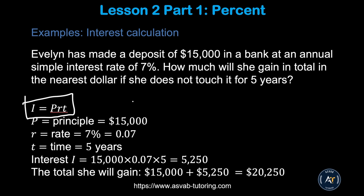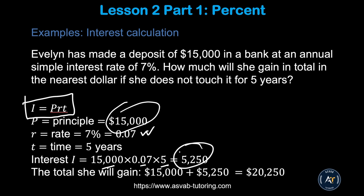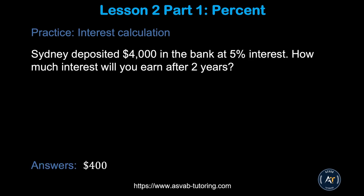For example: principal is $15,000, rate is 5 percent (convert to decimal: 0.05), and time is 5 years. Plug the values in: I = 15,000 × 0.05 × 5. This gives you the interest amount. Add that to the principal $15,000 to get the total amount gained.